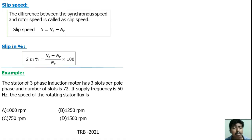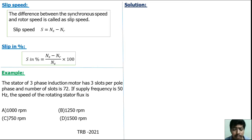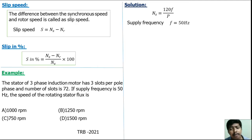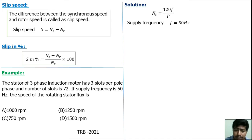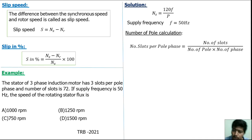This question is from the TRV 2021 examination. Our objective is to find the synchronous speed. For the synchronous speed calculation, we use the formula Ns = 120f / P. The stator supply frequency is given as f = 50 Hz. The number of poles is not directly given; instead, three slots per pole per phase and the number of slots are given, so we must find the number of poles. The formula is: number of slots = slots per pole per phase × number of poles × number of phases.